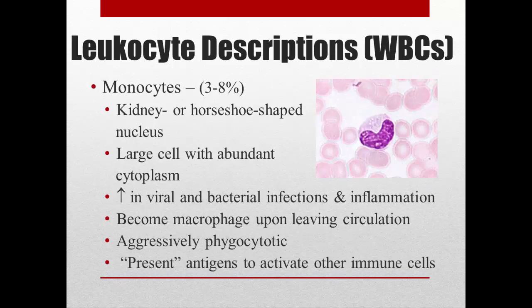Monocytes are the biggest of the leukocytes and are also agranulocytes. They have a big horseshoe- or kidney-shaped nucleus. We see these increase in bacterial and viral infections and inflammation. They are aggressively phagocytotic — unlike neutrophils, which are limited to about a dozen, monocytes can engulf bacteria indefinitely. They also play an important role in the immune response by presenting antigens. Monocytes become macrophages when they leave circulation — think of monocyte as the immature stage and macrophage as the mature stage.